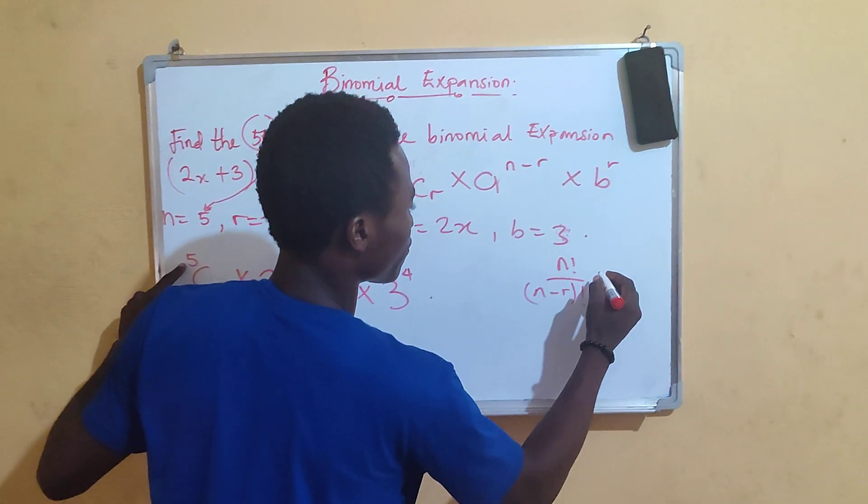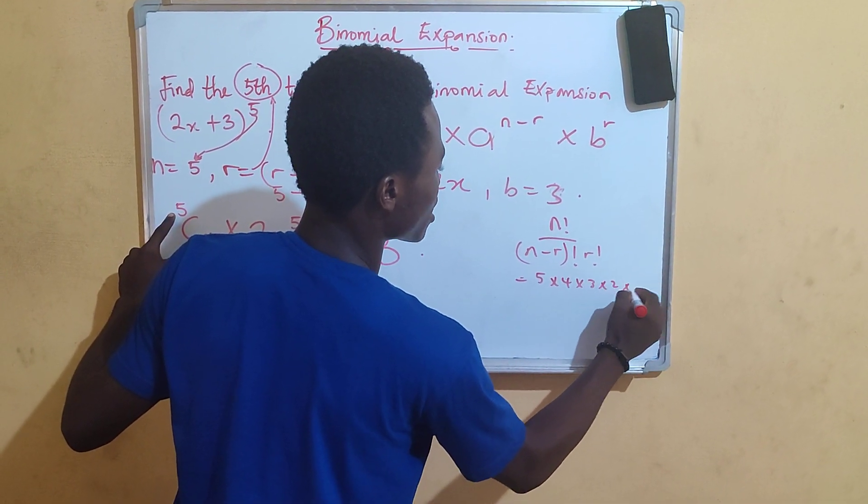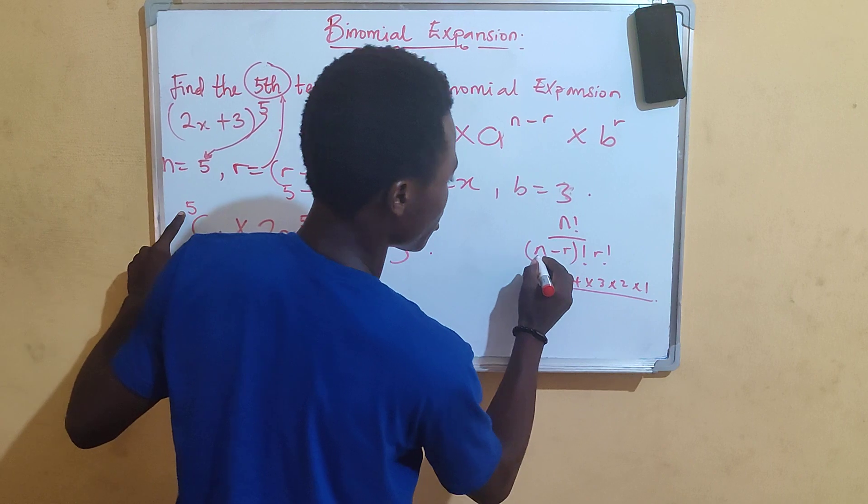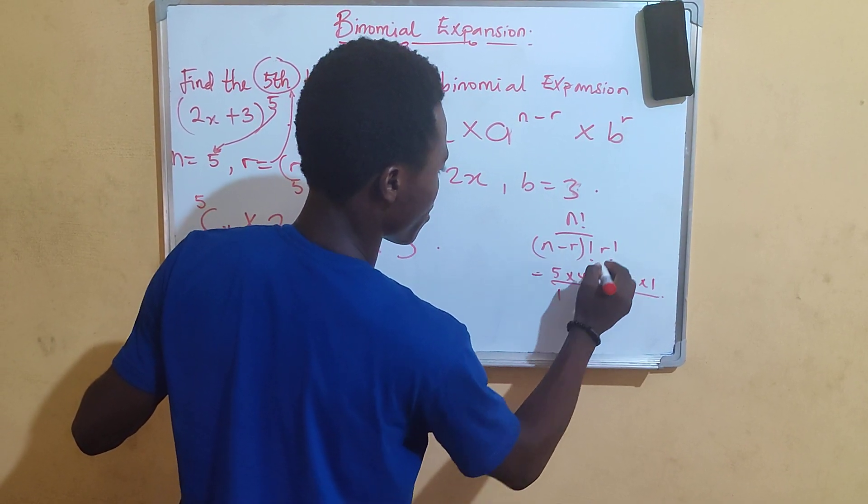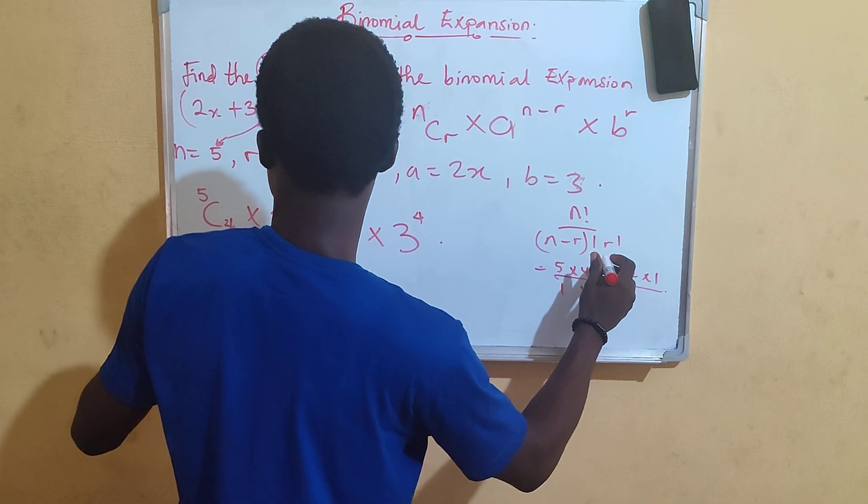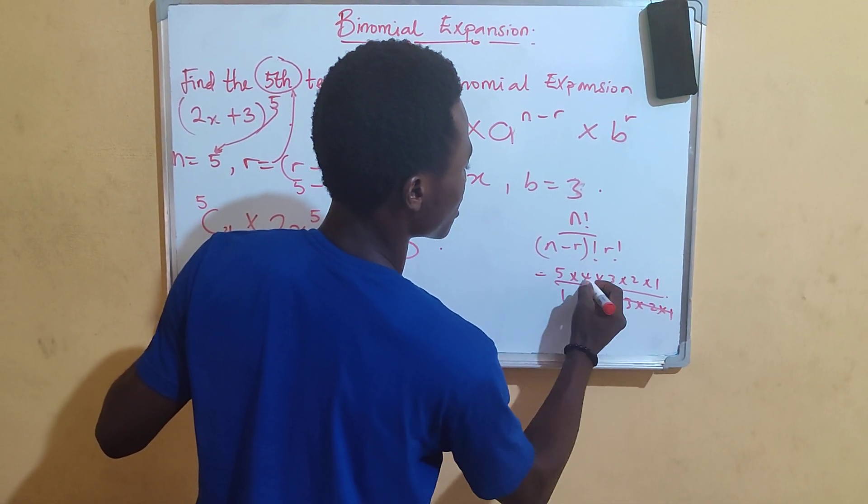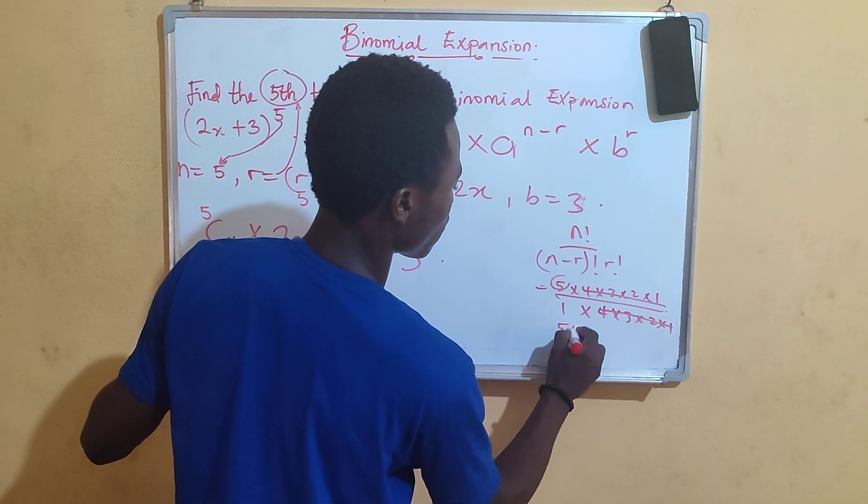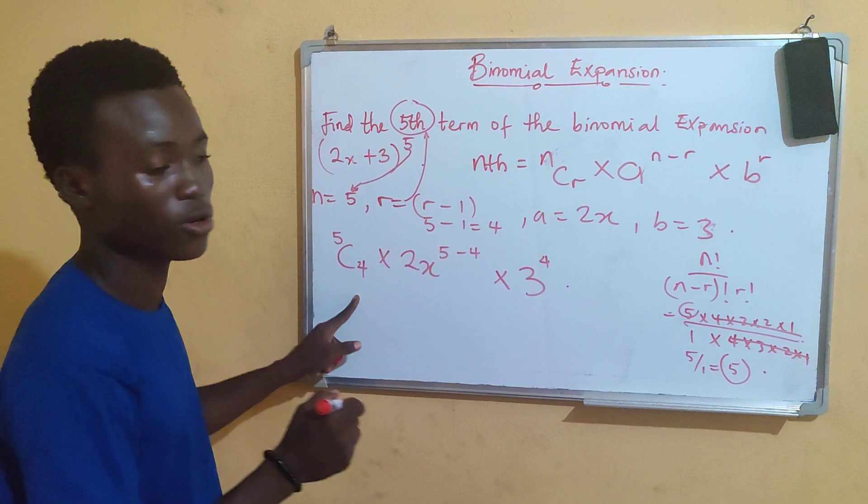Our n is 5. That means we have 5 times 4 times 3 times 2 times 1 which is 5 factorial divided by 5 minus 4. That is 1 factorial. I am left with 5 over 1 which is equal to 5. That means that 5 combination 4 is equal to 5.